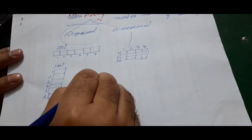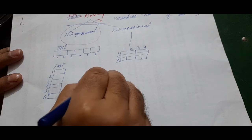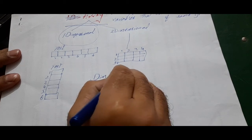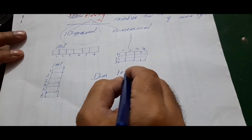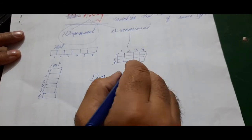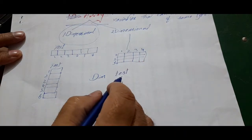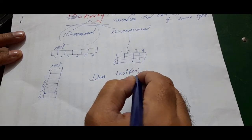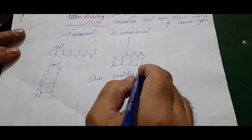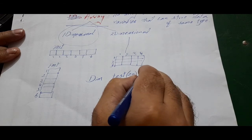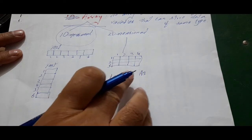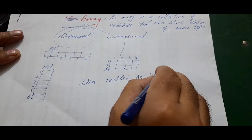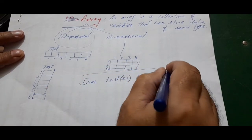As we have been talking about dimensions, we define an array with the keyword 'Dim' — derived from the word dimension. Then we give the name of the array. For example, a class has taken a test, so I am giving the array the name 'test'. In brackets, we tell it how many variables it will work for — I'm writing 20 because there are 20 students. Then we give the data type: I am writing integer because marks are stored in whole numbers.